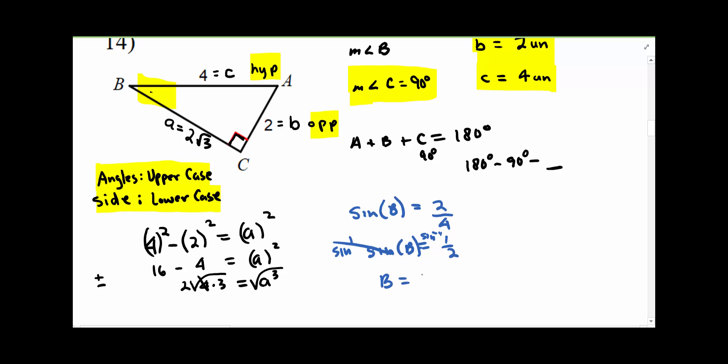And what you have to type into your calculator is second sine. It gives you a left parenthesis. You do 1 divided by 2, right parenthesis.